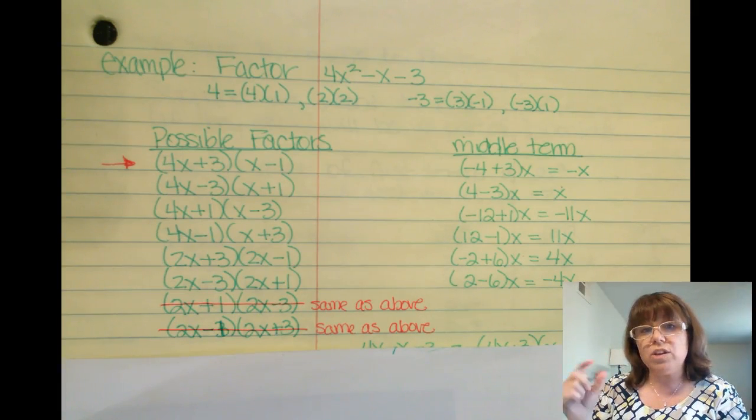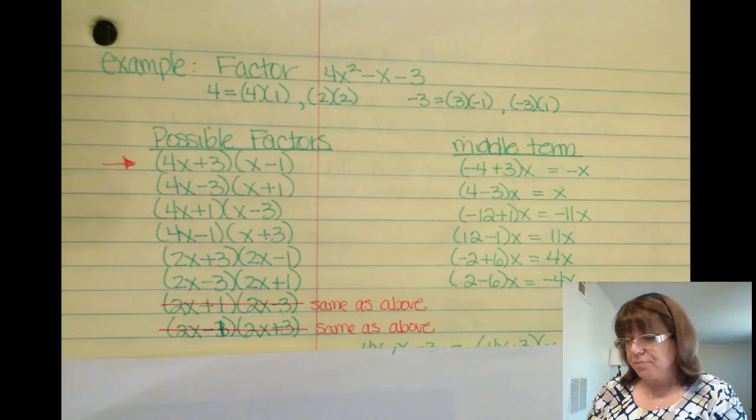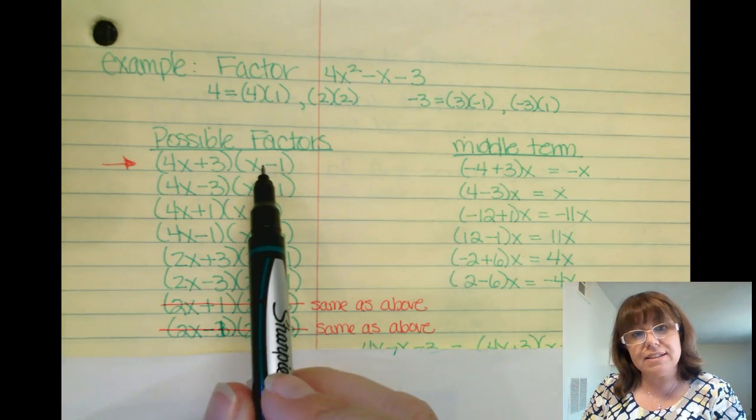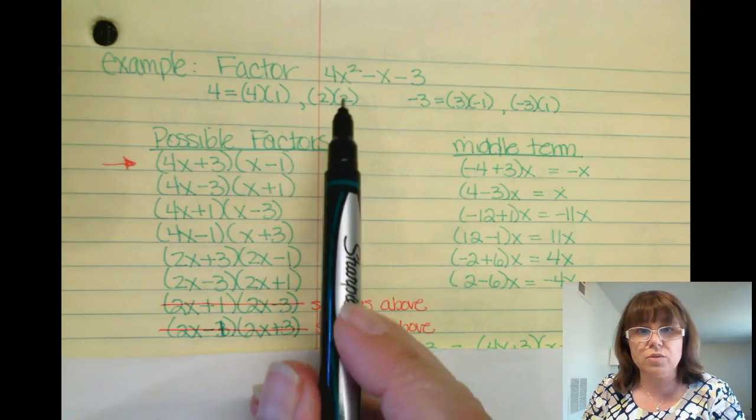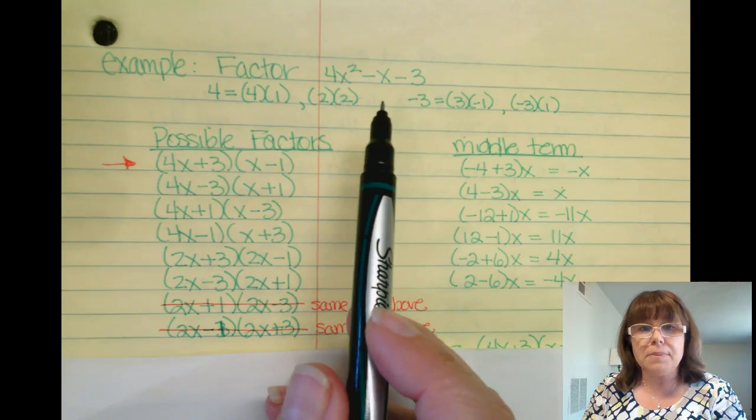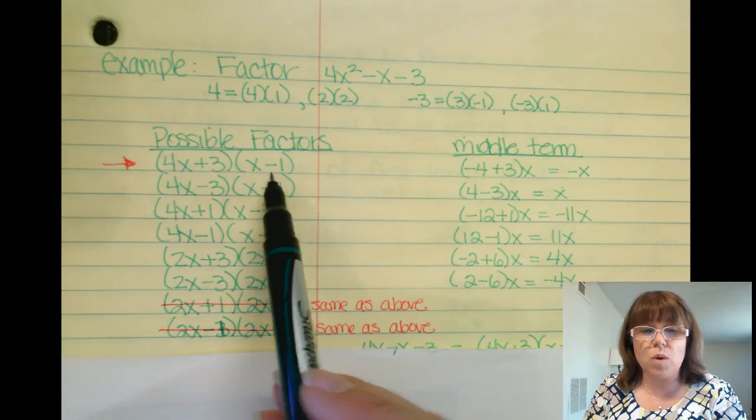So just kind of think about what you can rule out. Be smart about it. What can I rule out? So anyway, the first possible set that I came across was actually the correct set. So my answer to 4x squared minus x minus 3 will be 4x plus 3 times x minus 1.